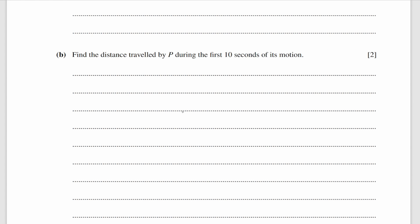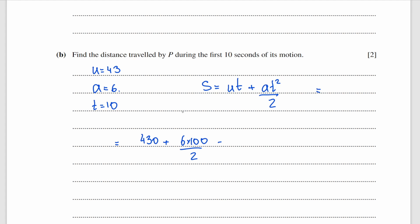The next part is straightforward since we know u equals 43 and a equals 6. We use the SUVAT equation s equals ut plus at squared over 2, substitute all the numbers in, and get 730.